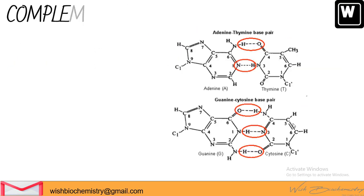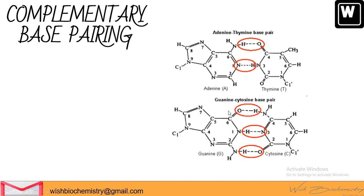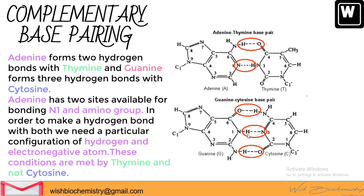Adenine forms two hydrogen bonds with thymine, and guanine forms three hydrogen bonds with cytosine. Adenine has two sides available for bonding — N1 and the amino group — and the required configuration of hydrogen and electronegative atoms is met by thymine and not cytosine. Applying similar analysis, only cytosine can make hydrogen bonds with guanine. The bond between adenine and thymine and the bond between guanine and cytosine both create shapes that accommodate the DNA diameter of two nanometers. Remember: AT, GC — adenine with thymine and guanine with cytosine.